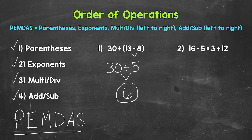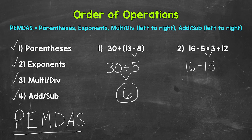Let's work through the order of operations. Do we have any parentheses? No. Any exponents? No. Any multiplication or division? Yes, so that's where we start. We have multiplication: 5 times 3, that is 15. Now we need to bring down everything we did not use, so we have 16 minus 15 plus 12, and we need to continue to work through the order of operations.